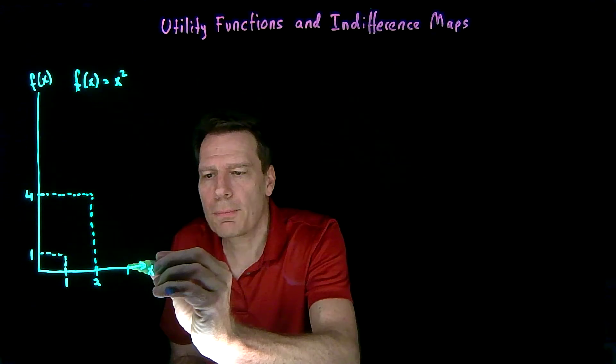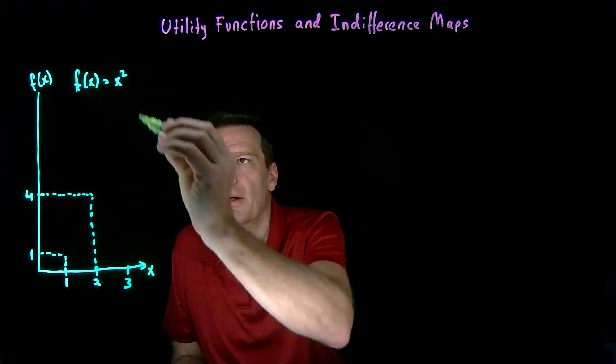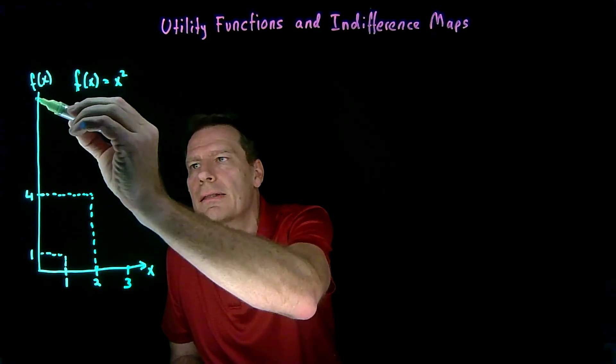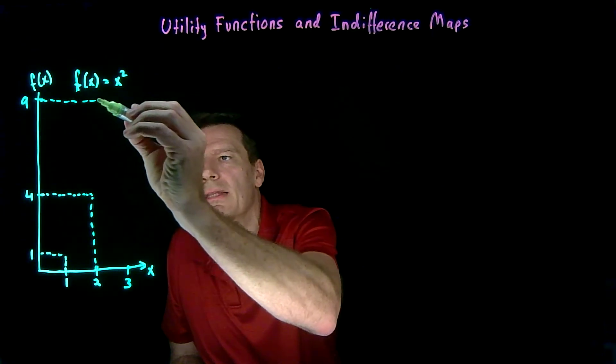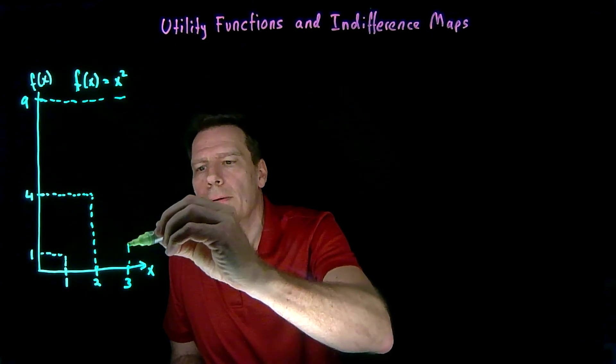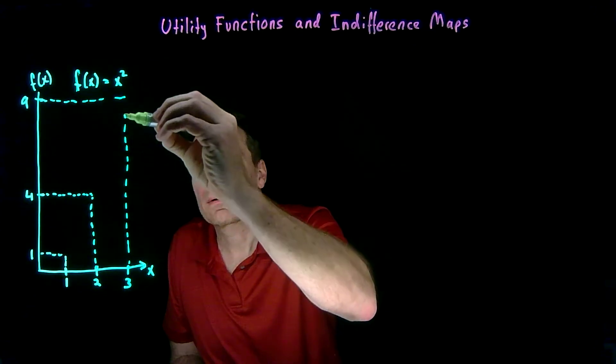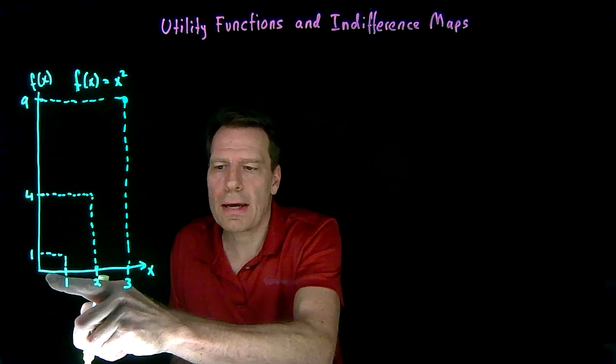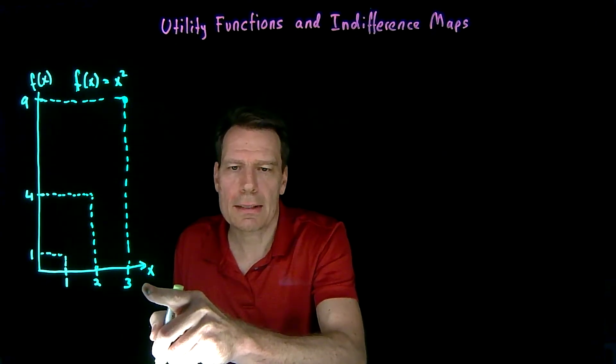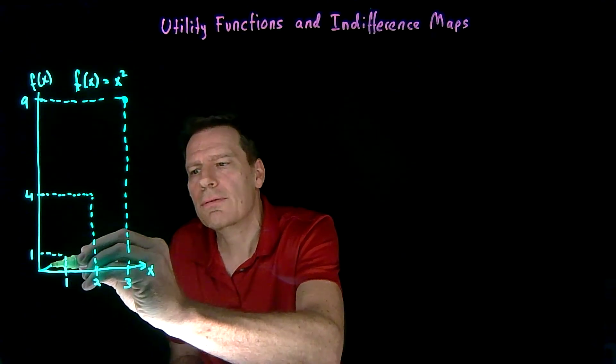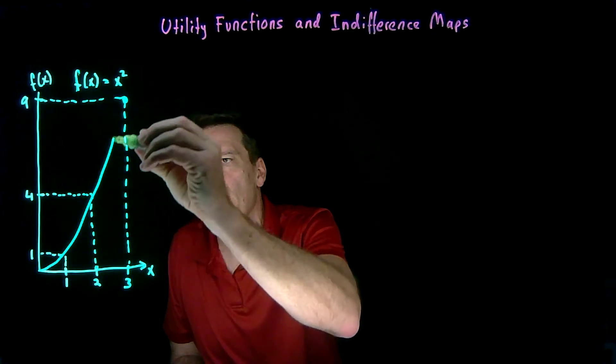Or we could take the point 3, plug 3 in, 3 squared is 9. So we would assign the number 9 to this point. And we can do that for every point on the x-axis to trace out what that function will look like.